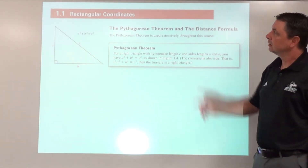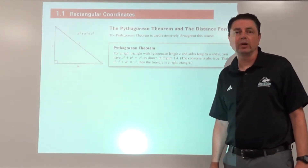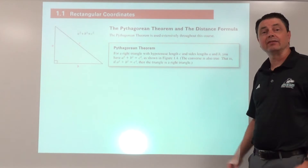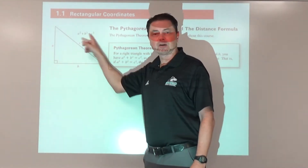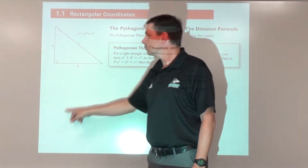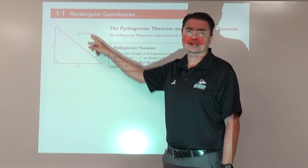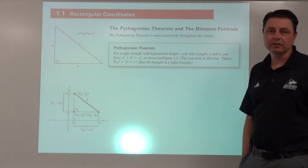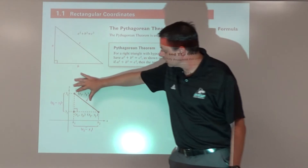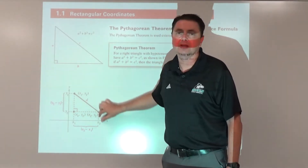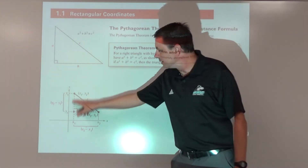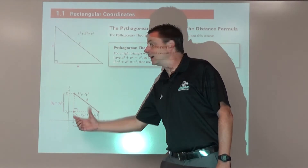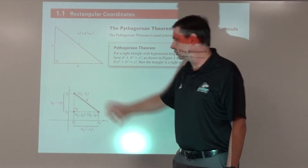Welcome to Hartman Math. We're going to take a look at lesson 1.1 rectangular coordinates. We're going to begin with the Pythagorean theorem, something you should have experience with. Within a right triangle, a squared plus b squared equals c squared. That's going to connect to the distance formula, because if we're finding the length of any segment in the coordinate plane, we can essentially make a right triangle out of that and apply a squared plus b squared equals c squared.